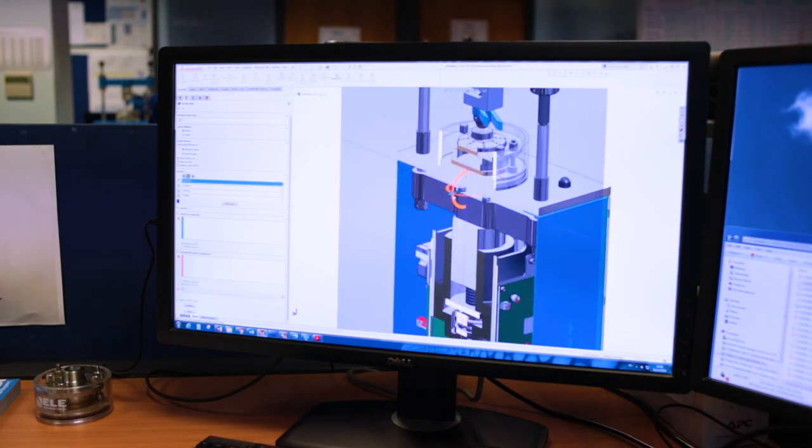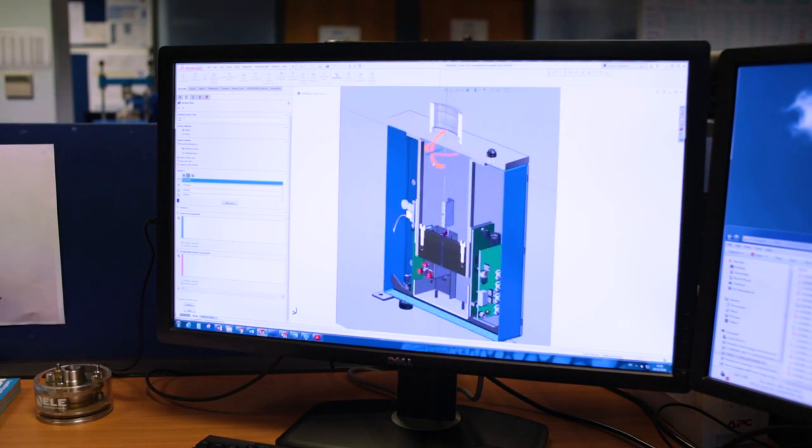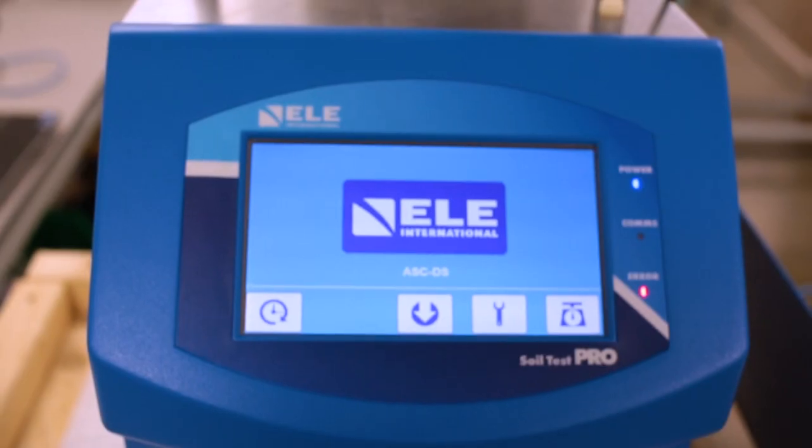What we have managed to do is shrink the footprint down, so we could put two machines in the same footprint as our old direct shear machine.